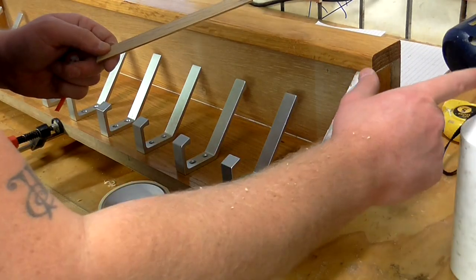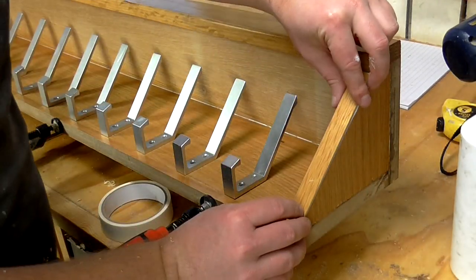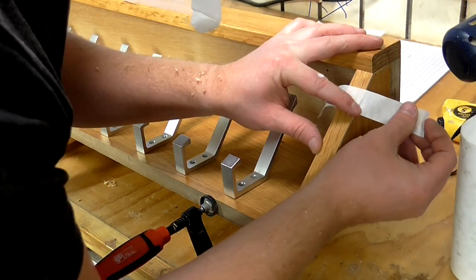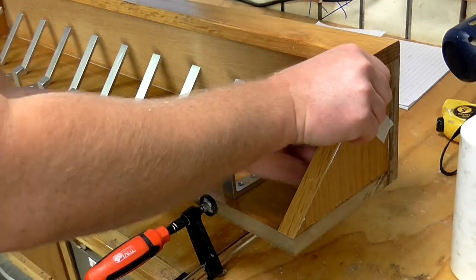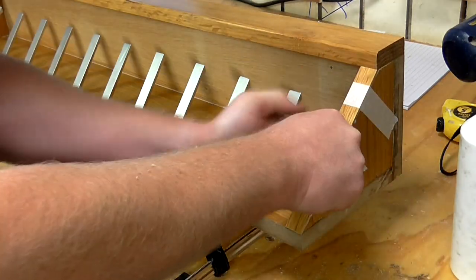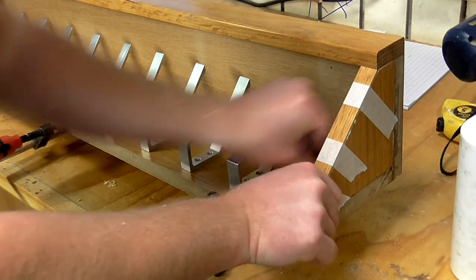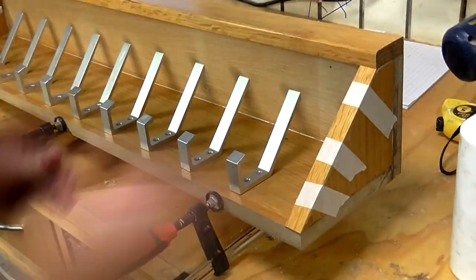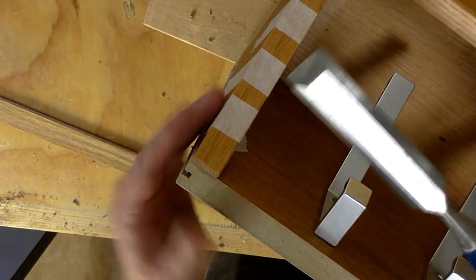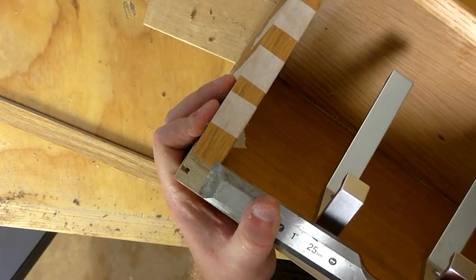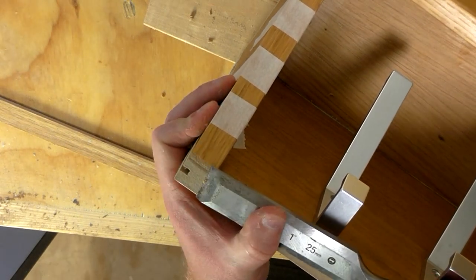I glued on the pieces of trim and used some masking tape to hold it in place while the glue dried. I used a chisel just to bevel the edge slightly so that it wouldn't be in the way of the bottom trim piece.